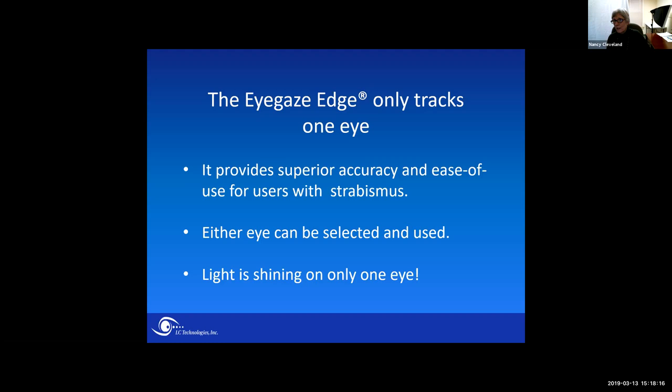We only track one eye. This is something we thought about 30 years ago — we assumed that some users would not have two functioning eyes, and depending on two eyes might be a dangerous route to go down. So from day one our systems have tracked one eye. We have binocular systems too, but it's not necessary — the difference in accuracy is negligible for this application. For somebody with strabismus, you're only tracking one eye, so you don't run into issues of which gaze point is really the gaze point. Either eye can be selected and used, and we're only shining light on one eye, so it's less fatiguing.